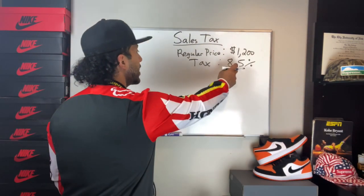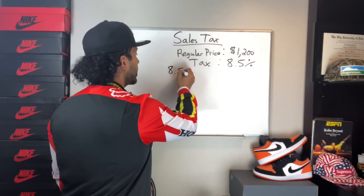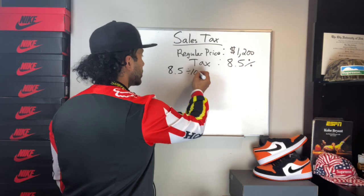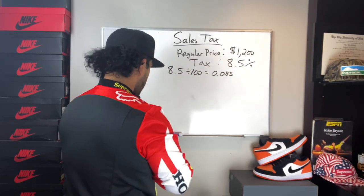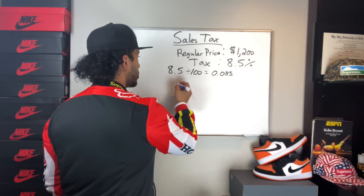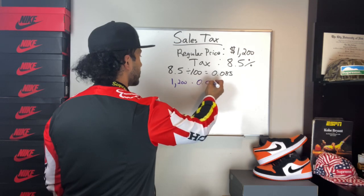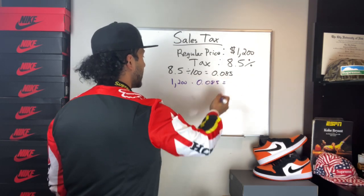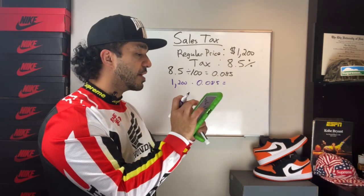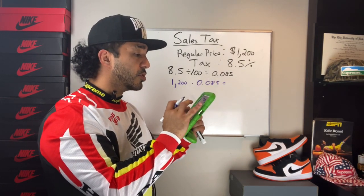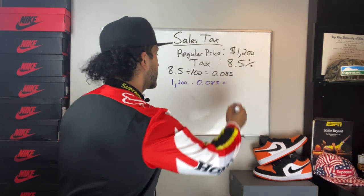The first step is to convert 8.5% into a decimal. I'm going to write that as 8.5 and divide it by 100, which gives me 0.085. My next step is to multiply 0.085 times the original amount. I'm going to pull out my calculator — not cheating, I'm going to say that forever. 1,200 times 0.085 is $102. That is my sales tax.